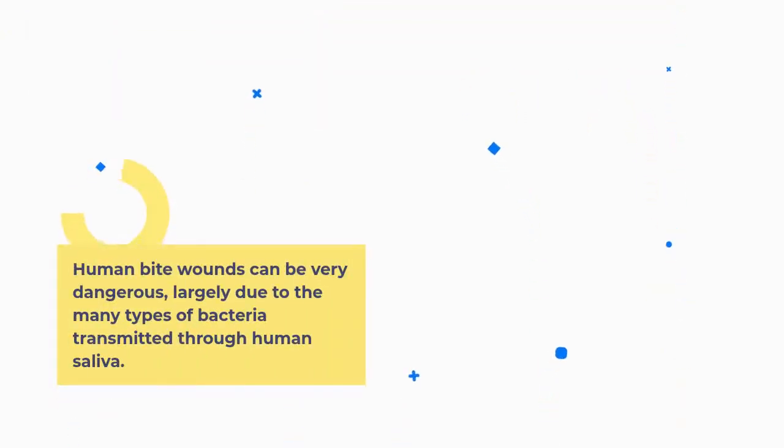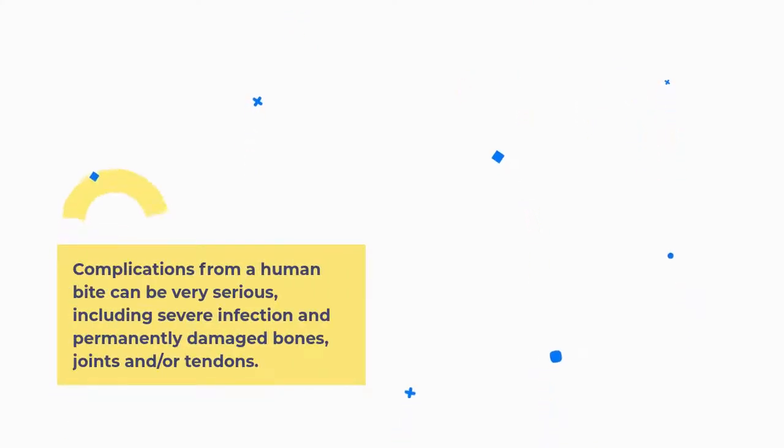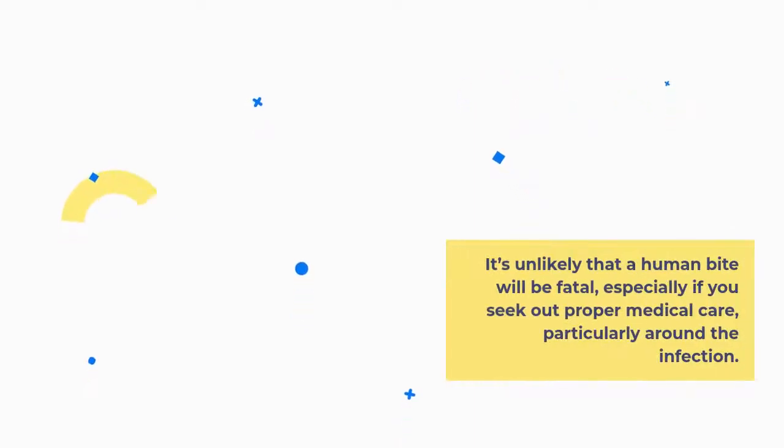Human bite wounds can be very dangerous, largely due to the many types of bacteria transmitted through human saliva. Complications from a human bite can be very serious, including severe infection and permanently damaged bones, joints and or tendons. It's unlikely that a human bite will be fatal, especially if you seek out proper medical care, particularly around the infection.